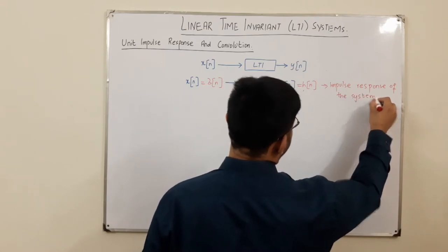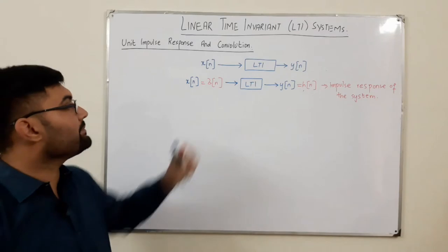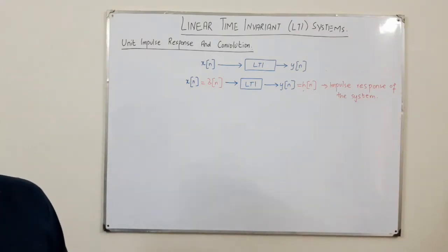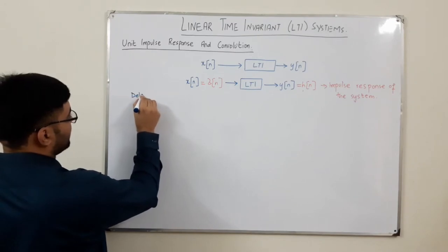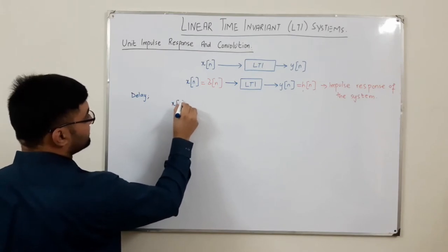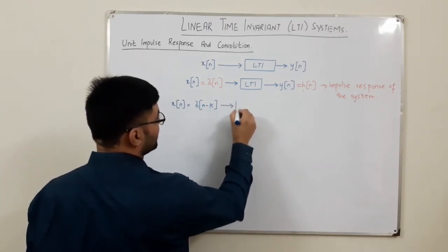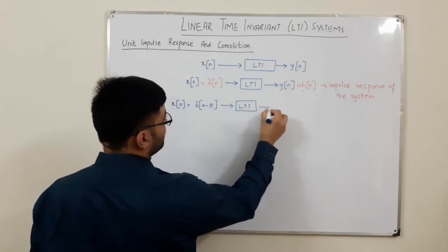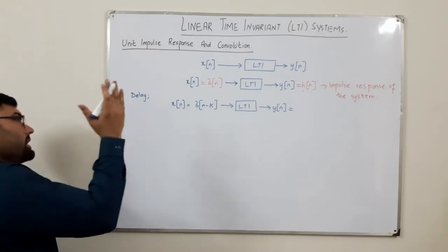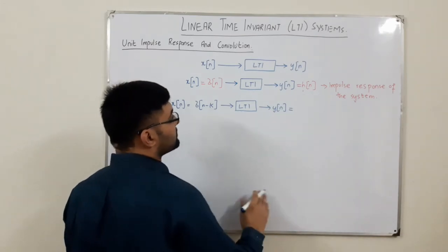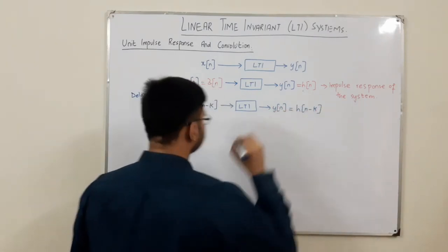The impulse response is the output of an LTI system when the input is the unit impulse signal. Now, if I delay my input — that is, if X of n is Delta of n minus k — and provide this to the LTI system, since this is a time-invariant system, the delay in the input is reflected in the delay in the output, so Y of n would be H of n minus k.